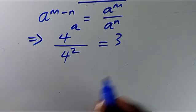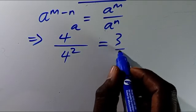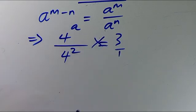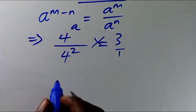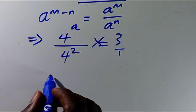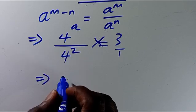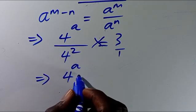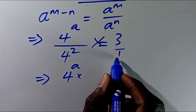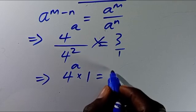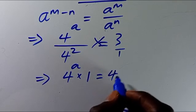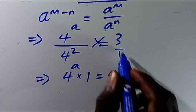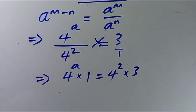So from here, this divided by 1 — let's cross multiply. When we cross multiply, this implies we are going to have 4 to the power of a times 1 equals 4 to the power of 2 times 3.